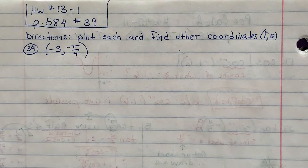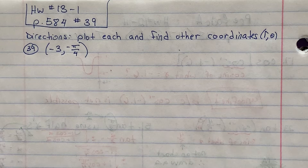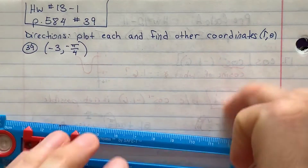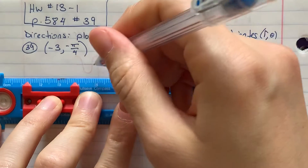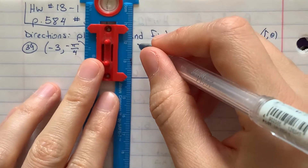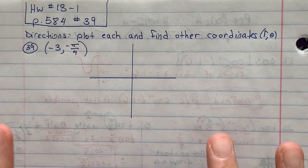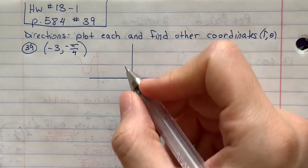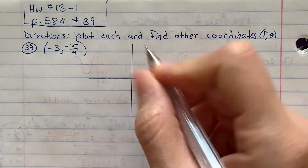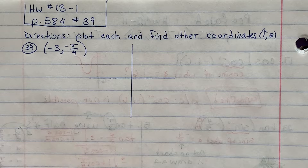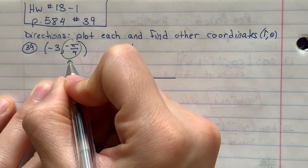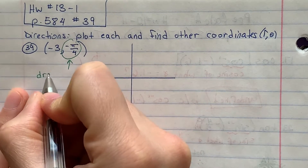Here I have on my paper the question that was asked, and the first part was to plot this point. Plotting these polar points can be very challenging, and I want to walk you through how to do this one more time. On my paper I'm just going to draw a set of axes — a polar grid is typically those circle graphs, but I'm just going to do mine on a normal axis. When you plot a polar point, you start by drawing the ray — you want to draw the angle first.